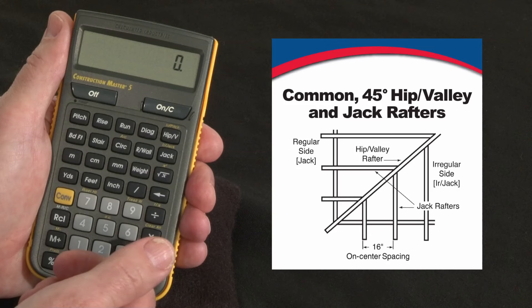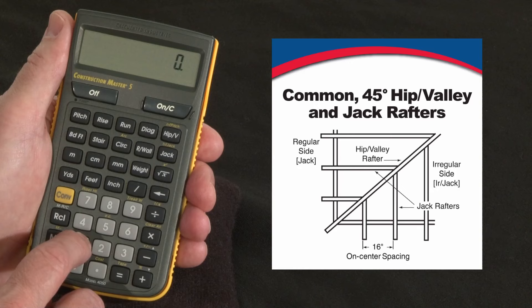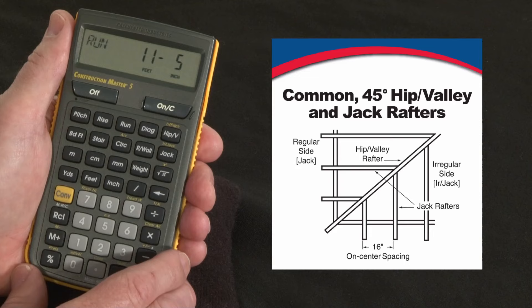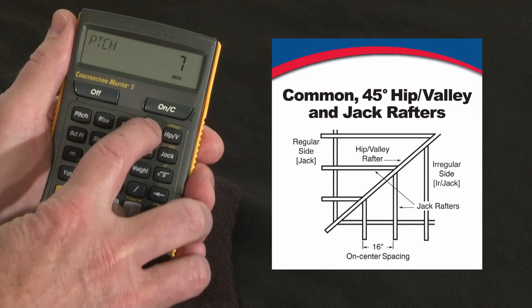Let me show you how to use your Construction Master 5's right angle solution keys to figure the common rafter length, a hip or valley length, and the jack rafter length. Say you know that your run — half the span — is 11 feet 5 inches, and we're going to do a 7-12 pitch, so that's 7 inches of pitch.